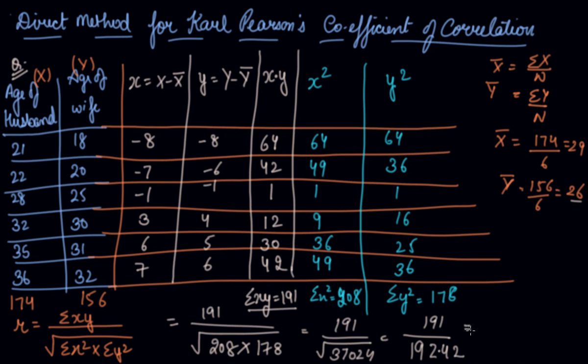Now we will solve it: 0.993. So it is near to 1, which means the age of the husband and the age of the wife are highly correlated. And there is a positive correlation between the age of the husband and the age of the wife.